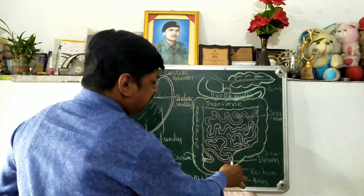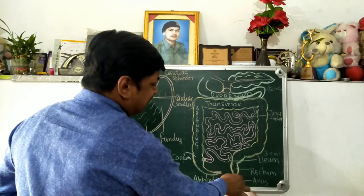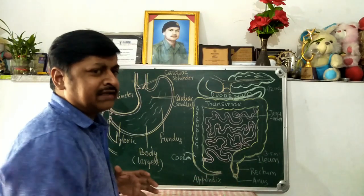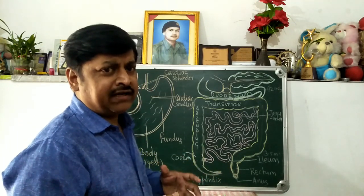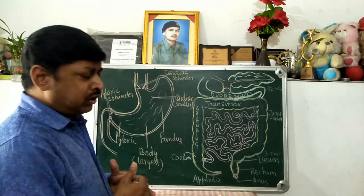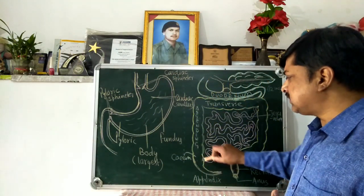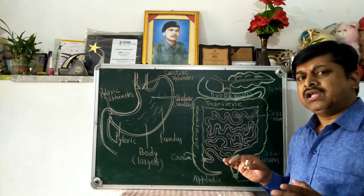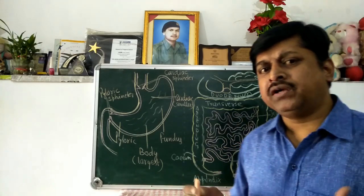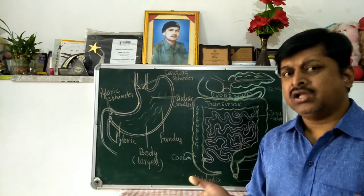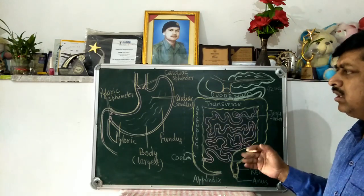The rectum is the last part of the large intestine, which opens outside through the anus. The opening is regulated by a sphincter called the anal sphincter, which controls defecation. There is no digestion in the large intestine; only water and minerals are absorbed here. The undigested food is converted into fecal matter, which accumulates in the rectum and is expelled out of the body through the anus from time to time — this process is called defecation, controlled by the anal sphincter.